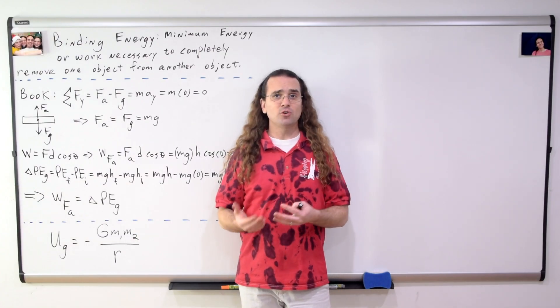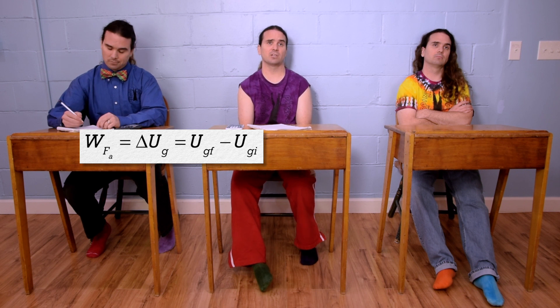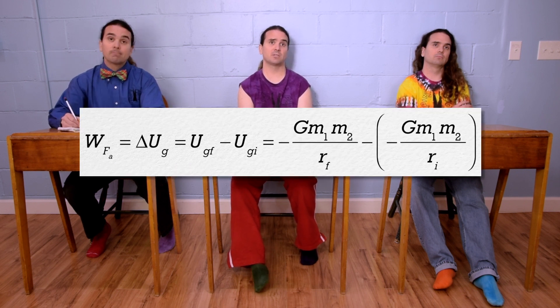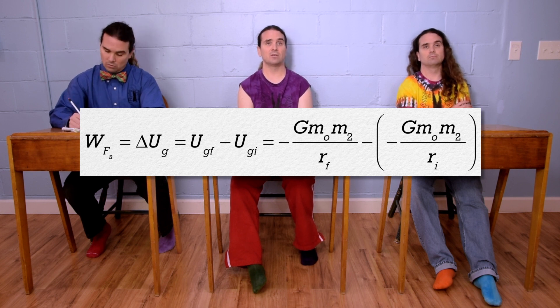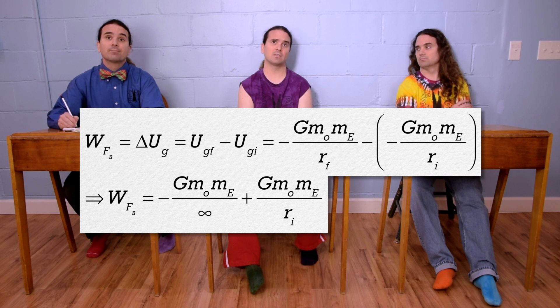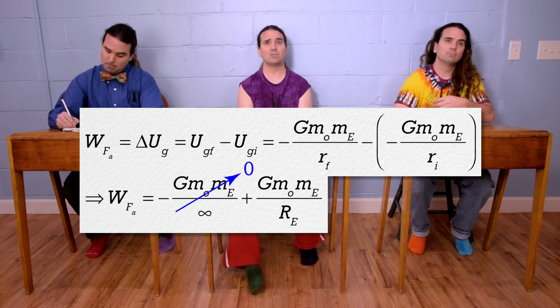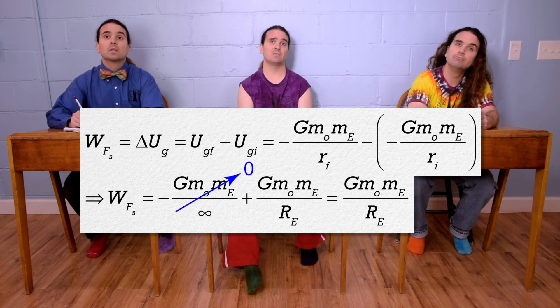Bobby, please determine the binding energy of an object to the planet — the minimum work necessary to completely remove an object from the planet. That will be the work done by the force applied, which equals the change in gravitational potential energy of the object, which equals the final gravitational potential energy minus the initial gravitational potential energy. We can substitute the equation for universal gravitational potential energy in for both the final and initial values. Mass 1 is the object and mass 2 is the Earth. Because we are completely removing the object from the Earth, the object's final position will be infinitely far away from the Earth. Anything divided by infinity is zero. So the universal gravitational constant times the mass of the object times the mass of the Earth, all divided by the radius of the Earth, is the energy which binds the object to the Earth.